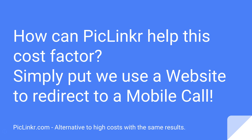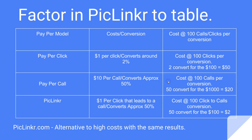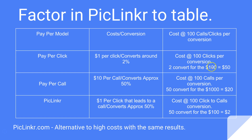Simply put, Piclinker uses a website to redirect to a mobile call. We're going to fit Piclinker into this table. We have the exact same table: pay-per-click at $1 per click, pay-per-call at $10 per call. Cost per 100 clicks per conversion is $50; cost per 100 calls per conversion is $20.